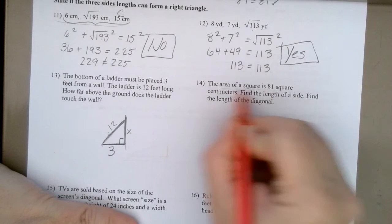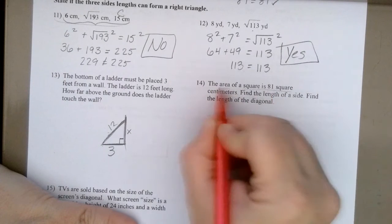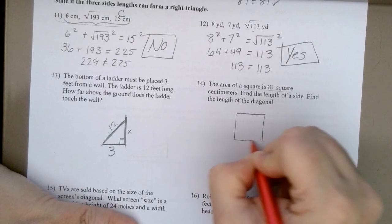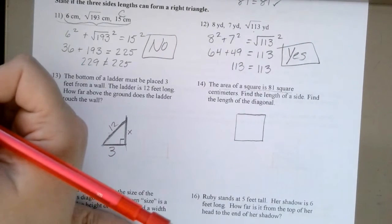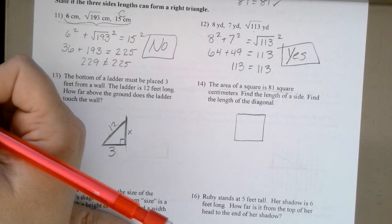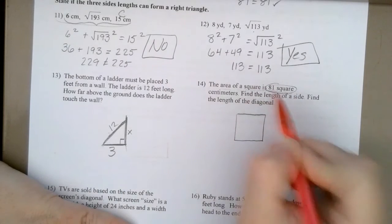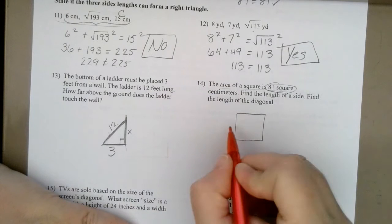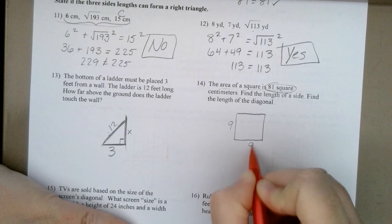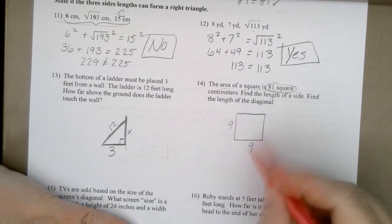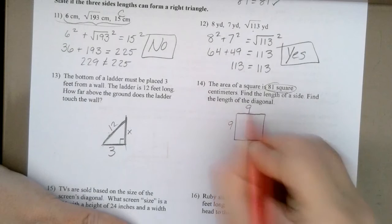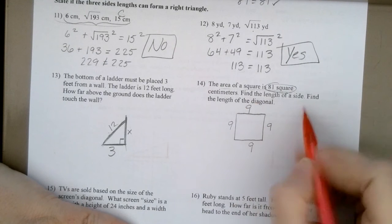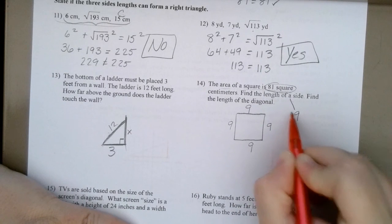The area of a square is 81 square centimeters. So, let's think about a square for a minute. What do we know about a square? All the sides are equal. If the area is 81 square centimeters, what do I know about the length of a side here? Wouldn't it be 9 and 9? Because 9 times 9 gives me 81. Which means that all of these sides are 9. What does it ask me? Find the length of a side. Well, okay. So, the answer there is 9 centimeters.